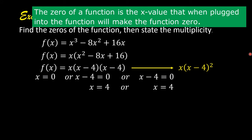The zero of a function is the x value that when plugged into the function will make the function zero. If you plug in zero here or replace x by zero, the right side will become zero. If you plug in 4 here or replace x by 4, 4 minus 4 becomes zero, 4 minus 4 becomes zero, the right side will become zero.